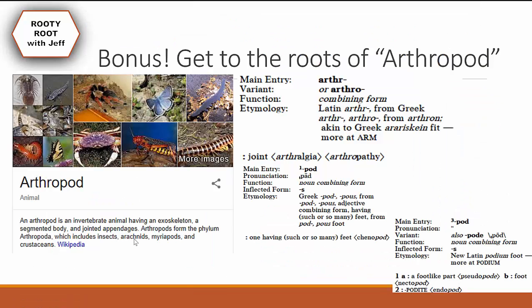Time for the bonus — let's get to the roots of 'arthropod'. Arthropods are invertebrate animals that have an exoskeleton, segmented body, and jointed appendages. The root is 'arth' meaning joint, and 'pod' meaning one having feet. Joints are in the definition — jointed appendages.